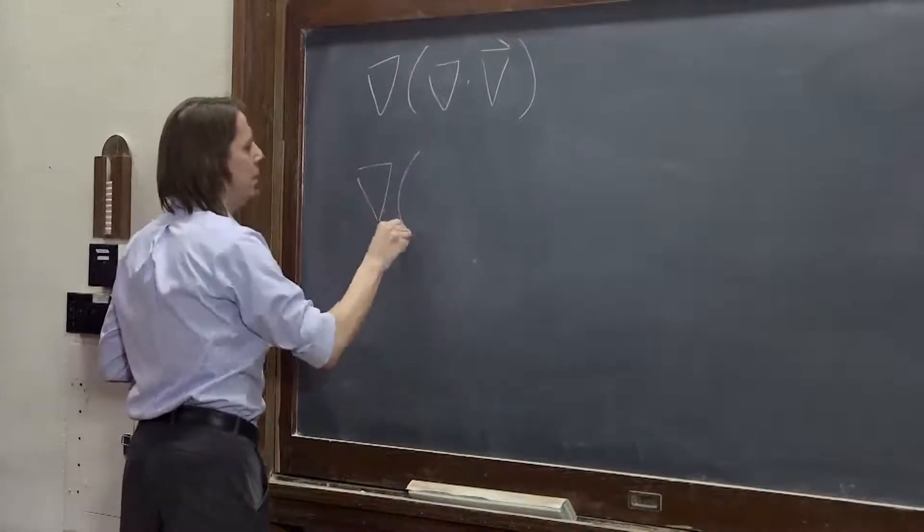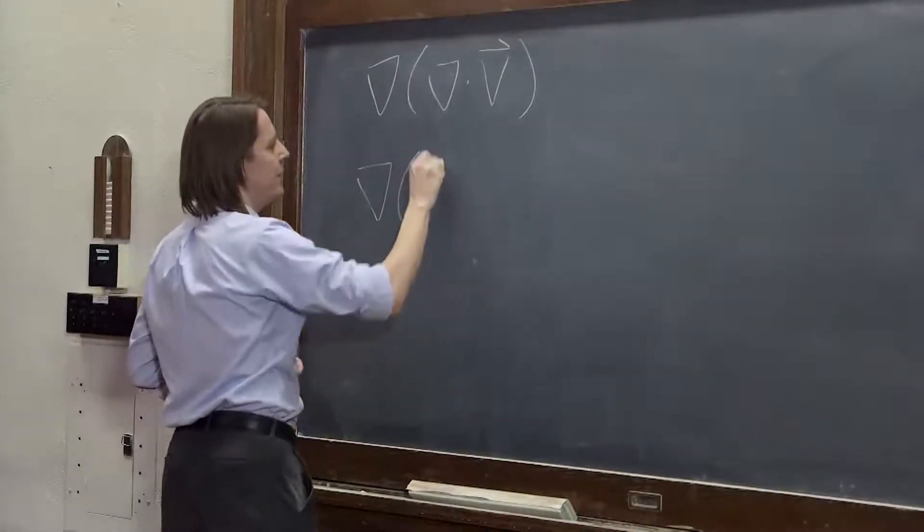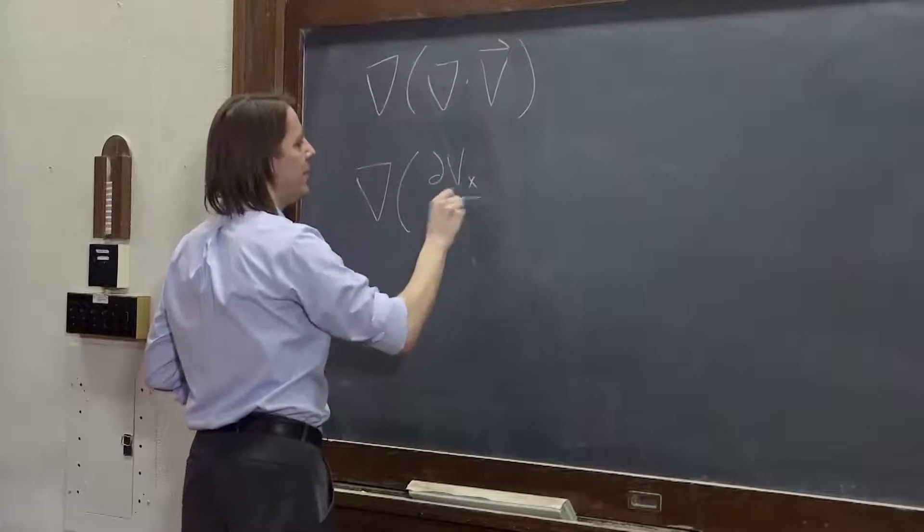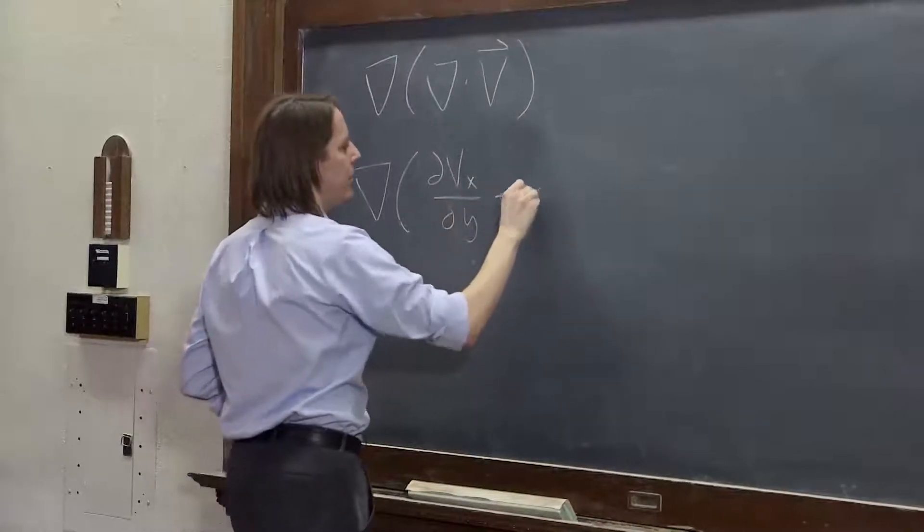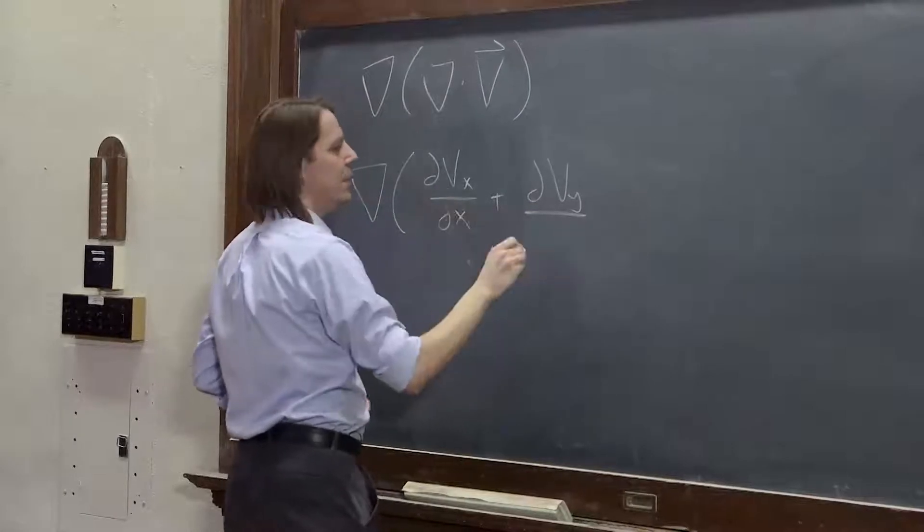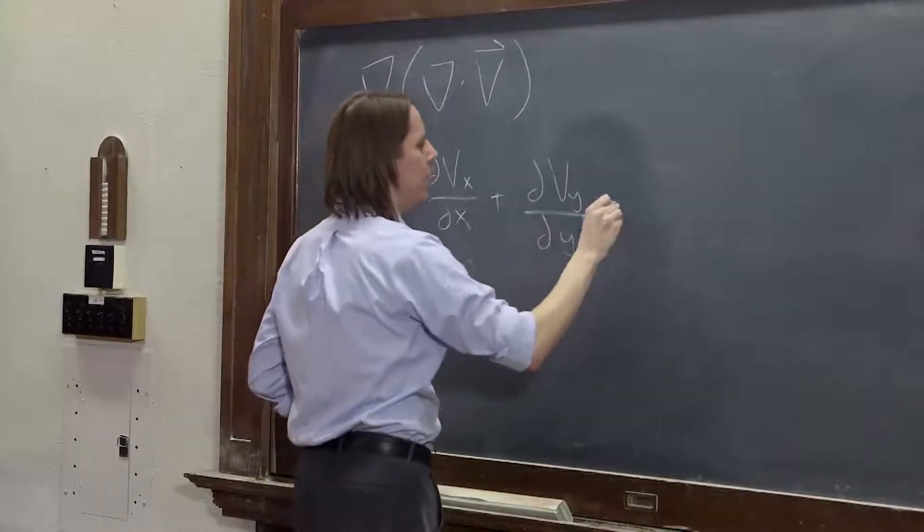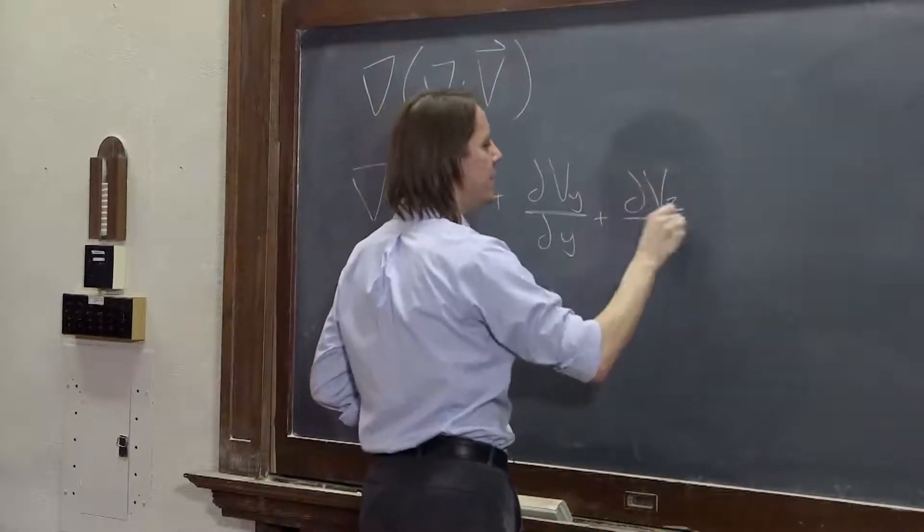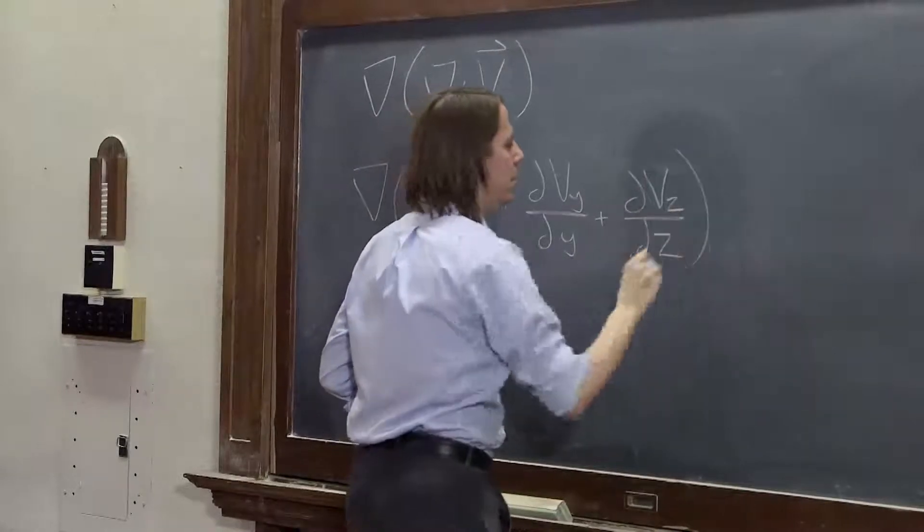Well, the divergence we know is dvx dx plus dvy dy plus dvz dz.